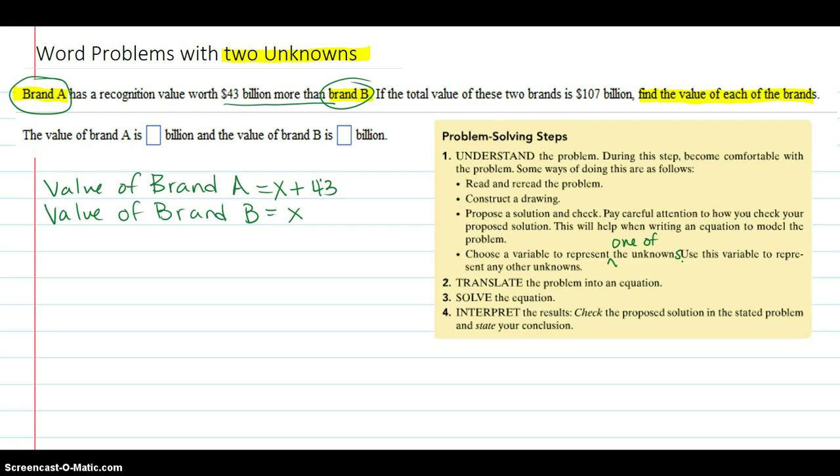So now we're going to go to step two. Step two is to translate the problem into an equation. So the only thing we didn't use here so far is that 107. And that is the total. That is the total value.